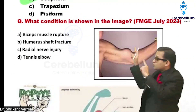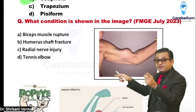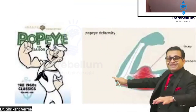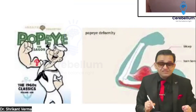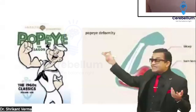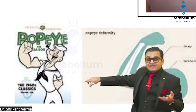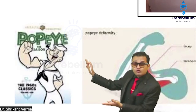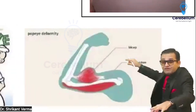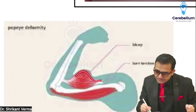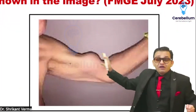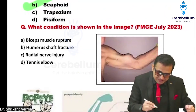FMG July 2023 — this question also came from NEET-PG. There is a bulge on the front of the forearm. You know Popeye the sailor man — he had a bulge after eating spinach. Just like that appearance, whenever there is a rupture of the biceps, there is bulging. This is called the Popeye sign — biceps rupture.